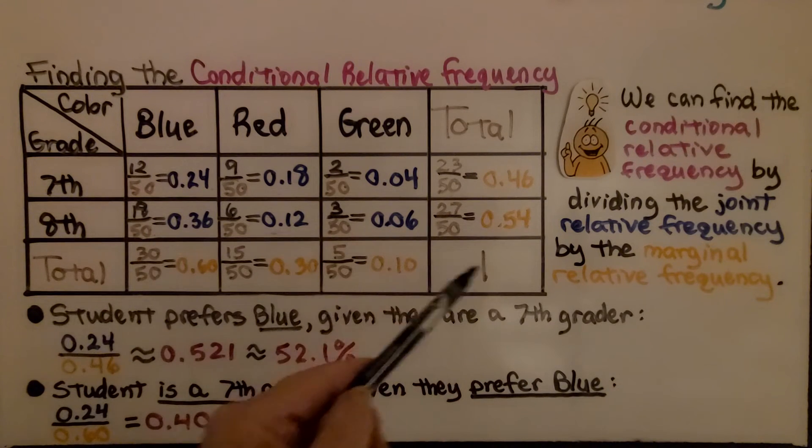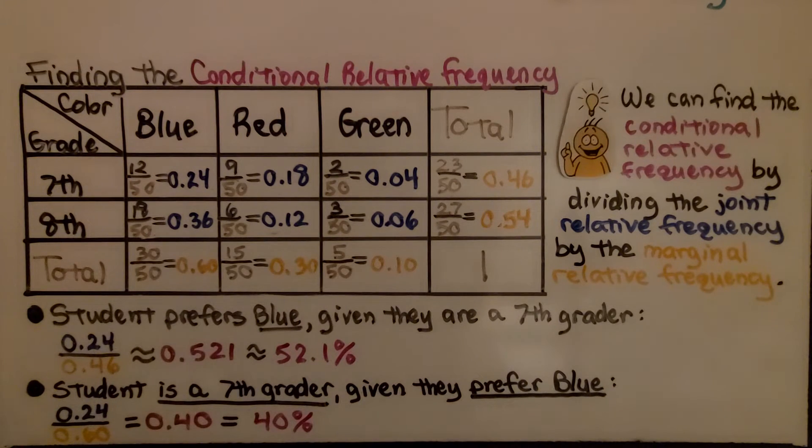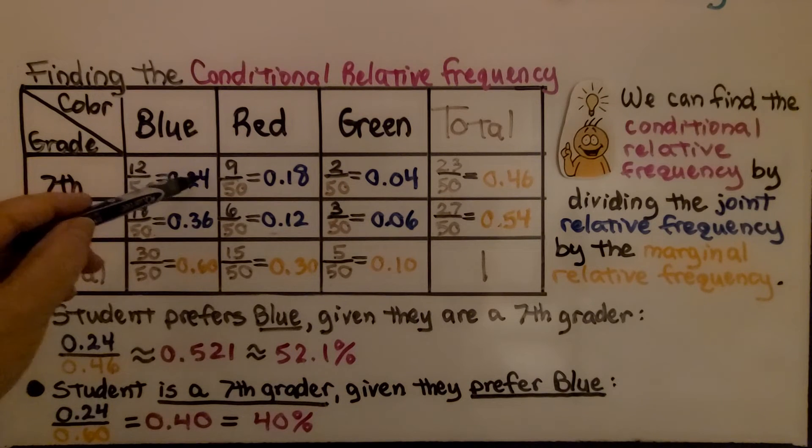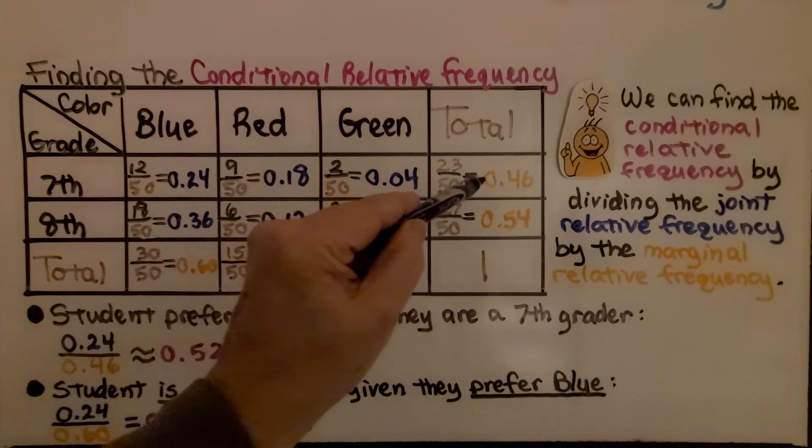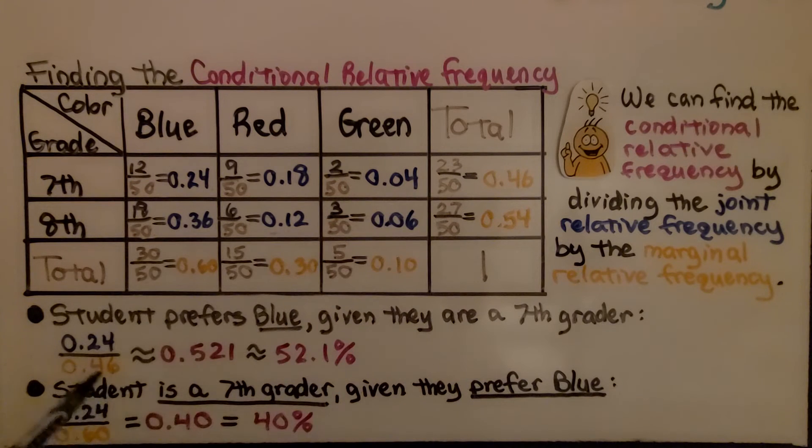by the marginal relative frequency. So if a student prefers blue, given that they're seventh graders, we're going to do zero point two four divided by the zero point four six, which comes out to about fifty-one and one-tenth percent. Same answer as before.